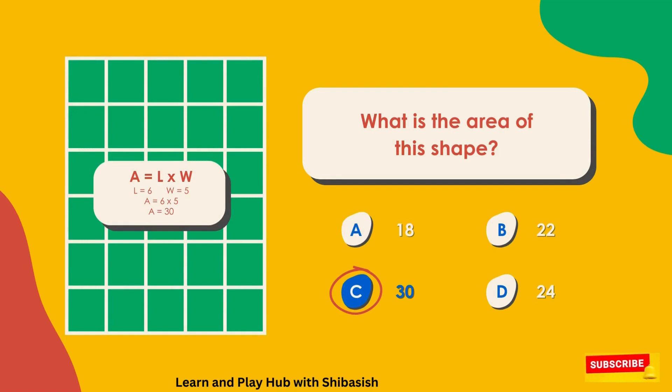A equals L times W. L equals 6, W equals 5. A equals 6 times 5. A equals 30.